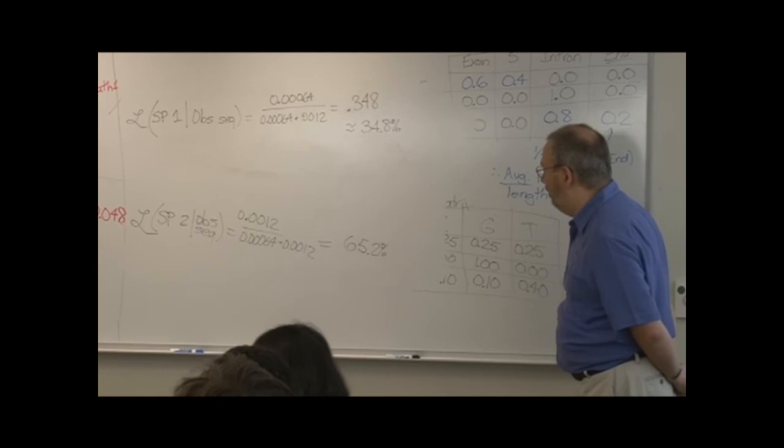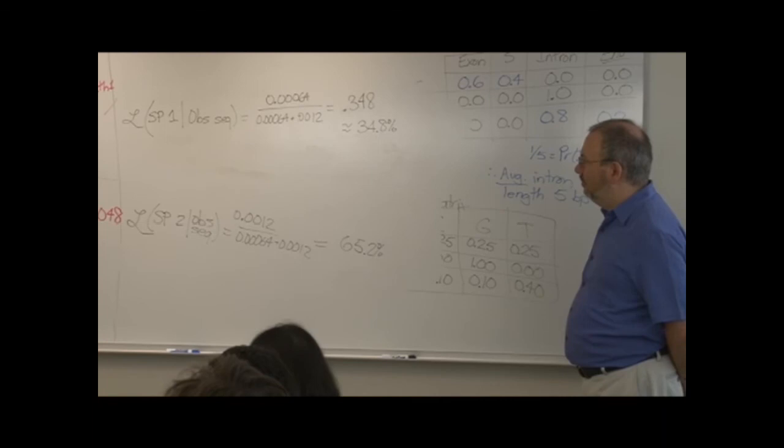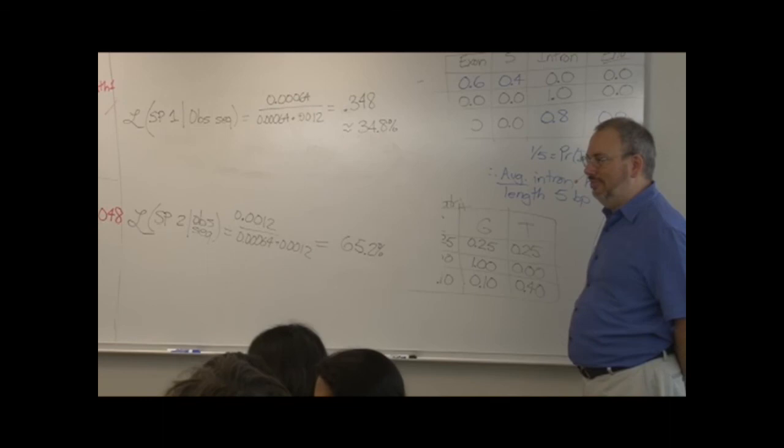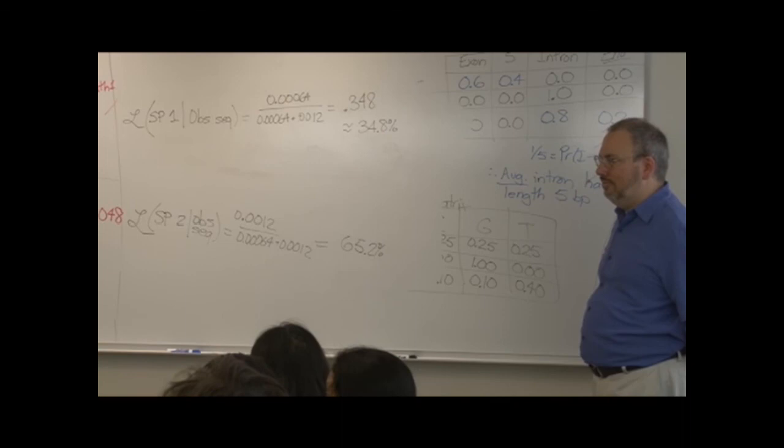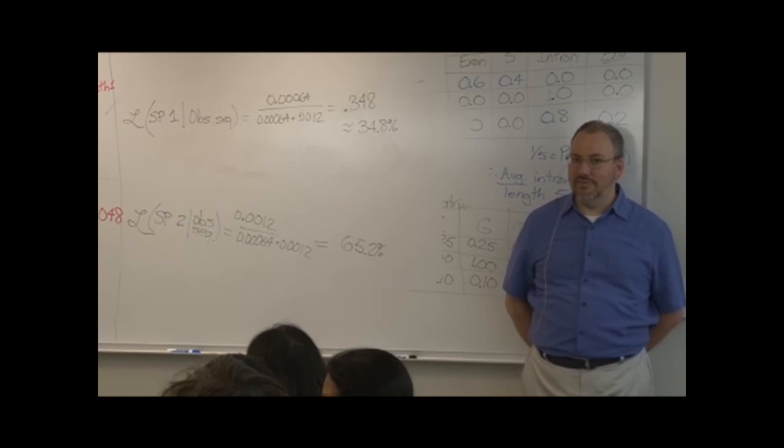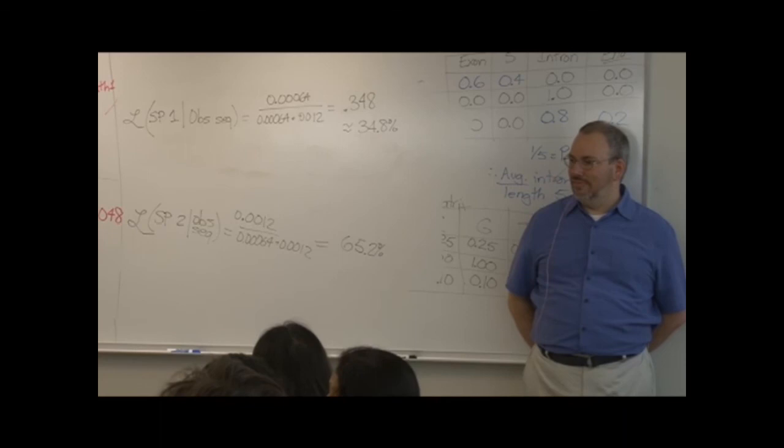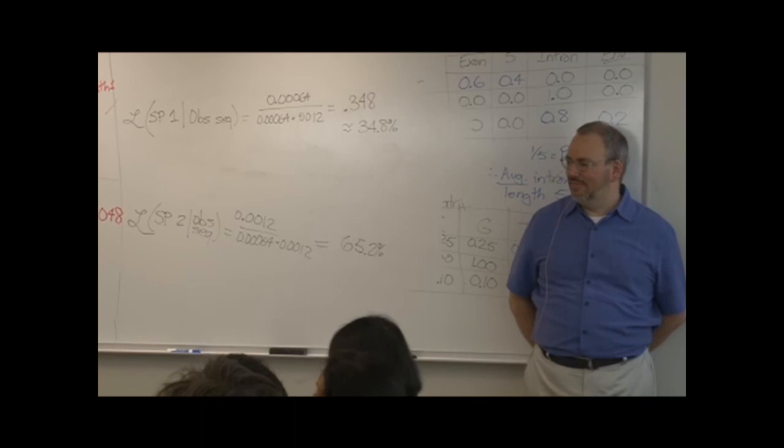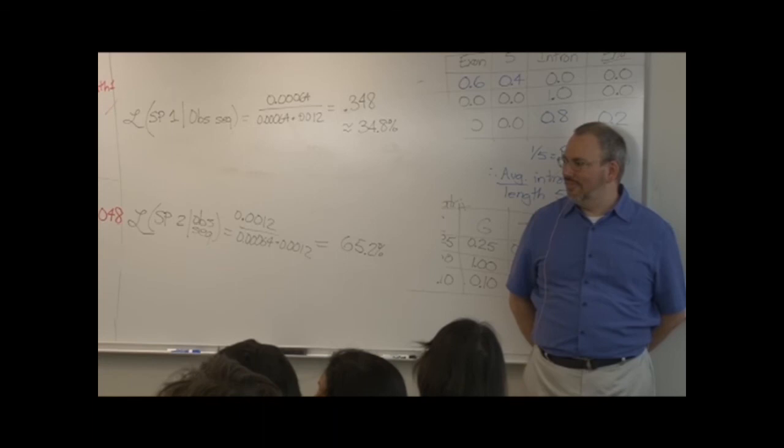What I like about laying it out this way is it allows you to point out to the students how little information goes into the simplest model. That is, what are we working with? We're working with base composition. And gee, it's a good thing that the average base composition is different between introns and exons. Otherwise, we wouldn't have any way of estimating whether we were in an intron or in an exon.